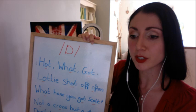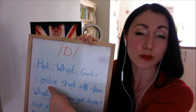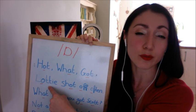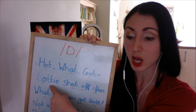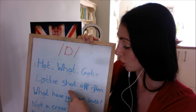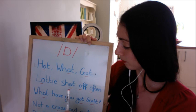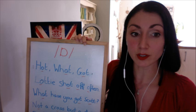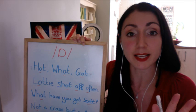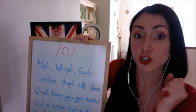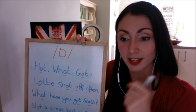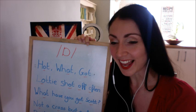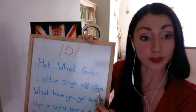Let's carry on. We have 'hot', 'what', 'got'. Now let's put it into a sentence: 'Lottie shot off often.' Lottie is a name — short for Charlotte. 'Shot off' is a phrasal verb meaning to leave very quickly, like you were shot from a gun. For example: 'I'm sorry, I'm late for a meeting — I have to shoot off.' So Lottie shot off often — she left very quickly, regularly.